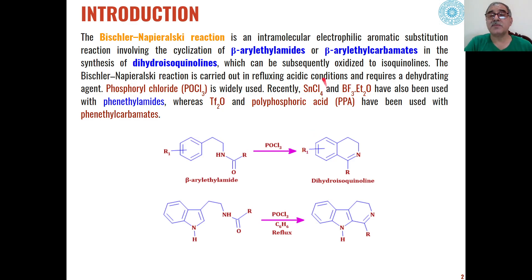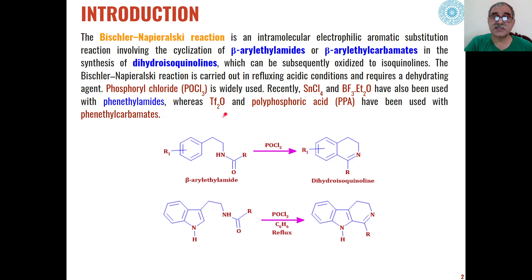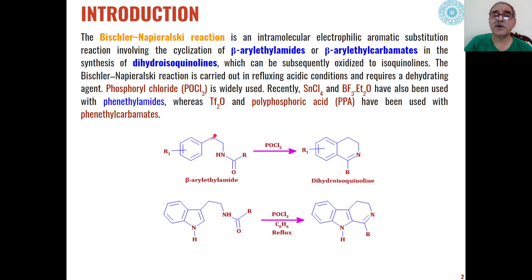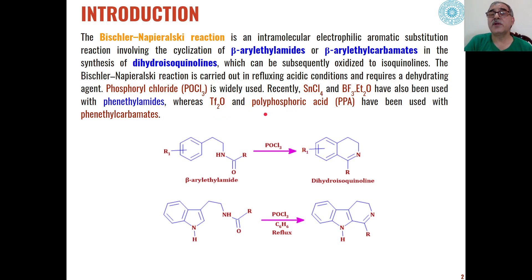The most common among them are SnCl4 and boron trifluoride etherate, which are mainly used in the case of phenylethylamides, whereas Tf2O and polyphosphoric acid are used for beta-aryl carbamides. So depending upon the type of substrate used, we can choose the catalyst which leads to the electrophilic aromatic substitution cyclization to form dihydroisoquinoline as the product.